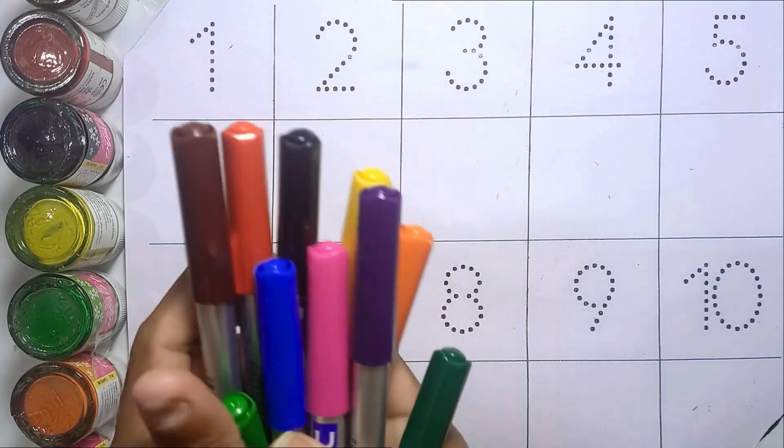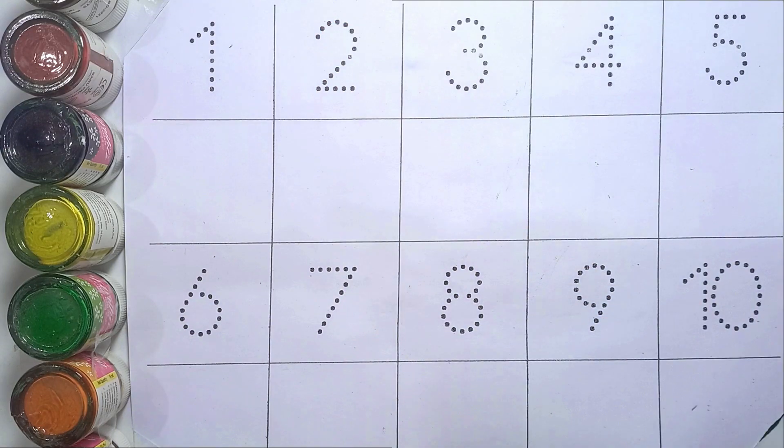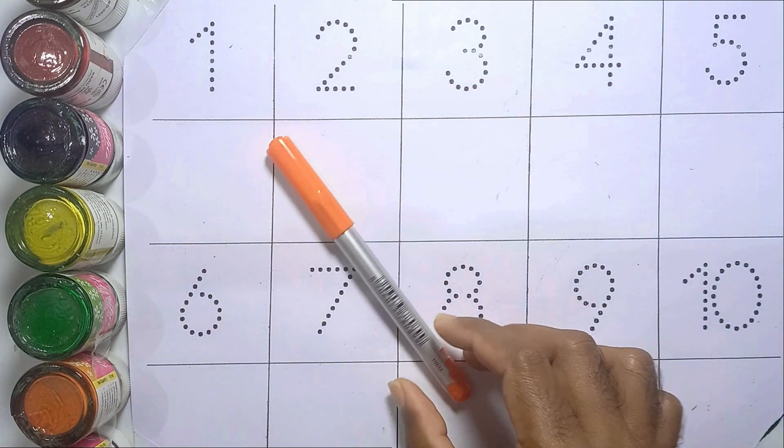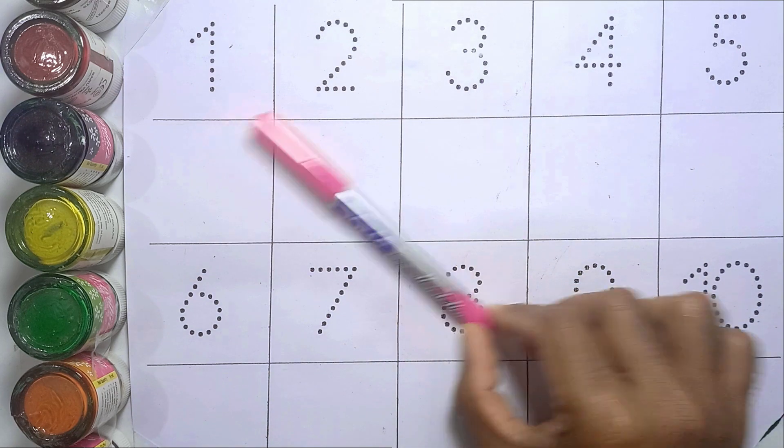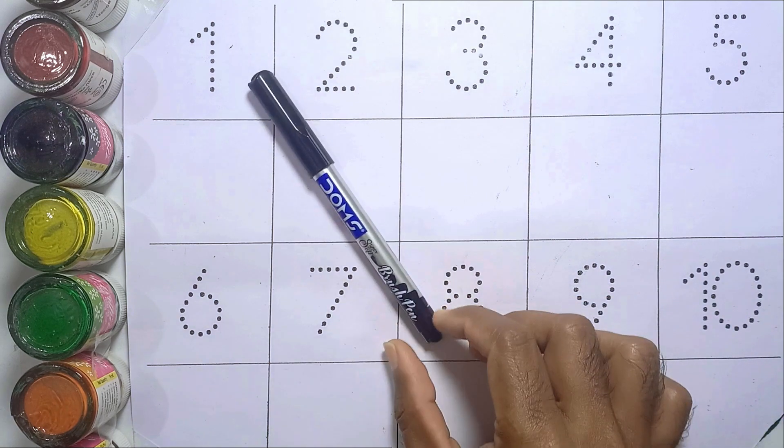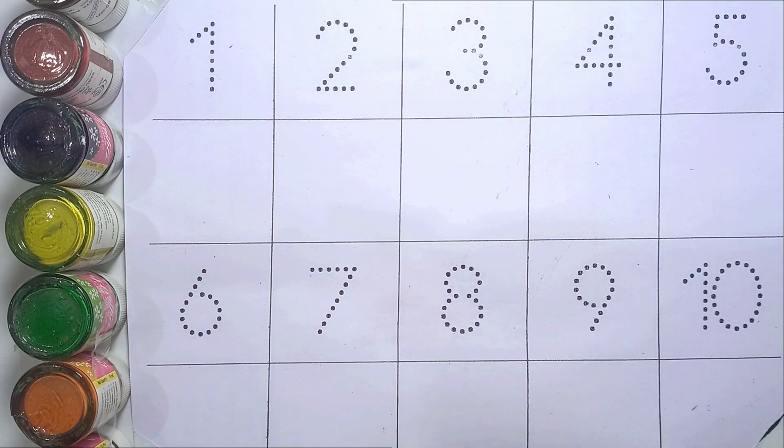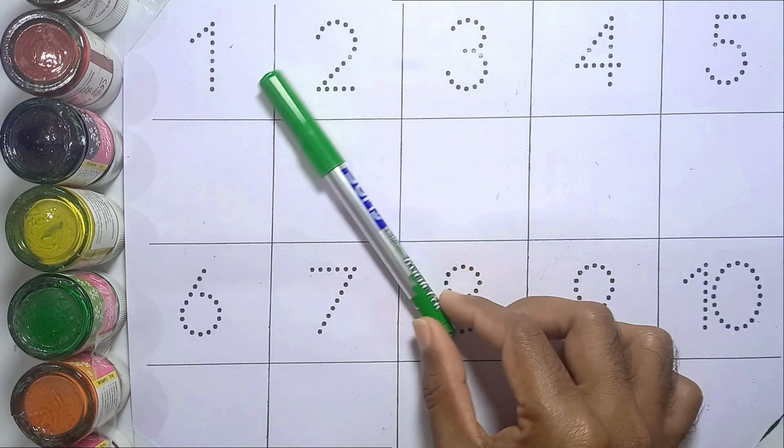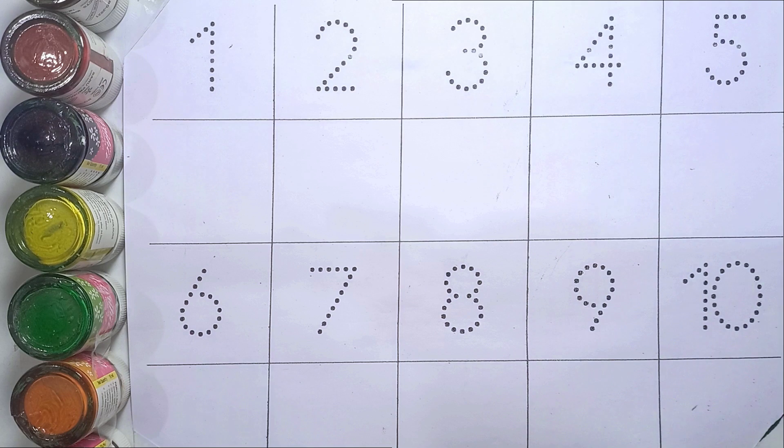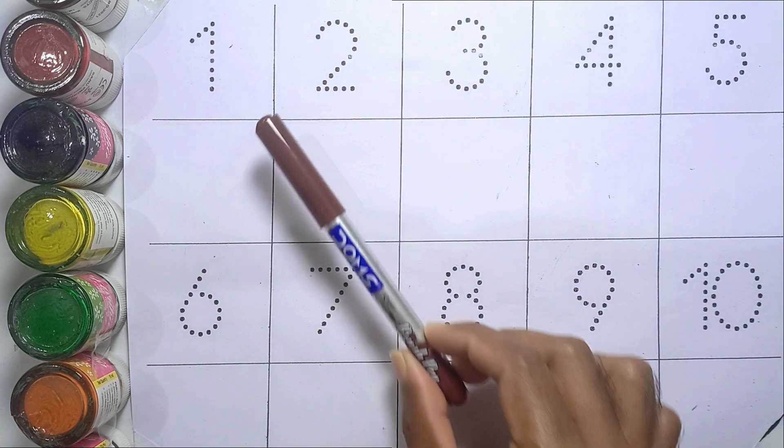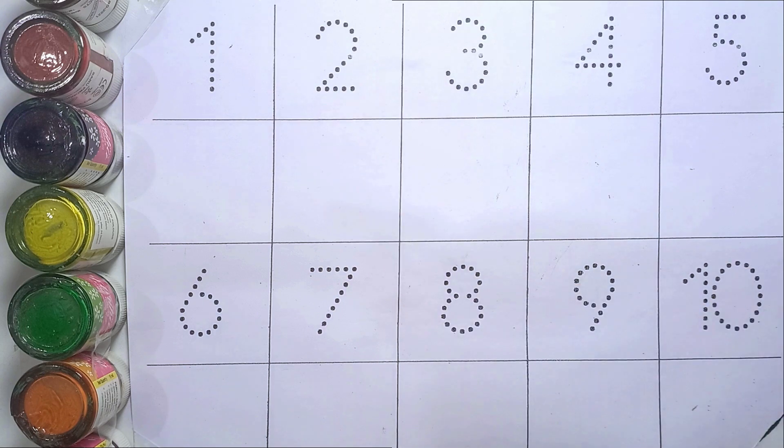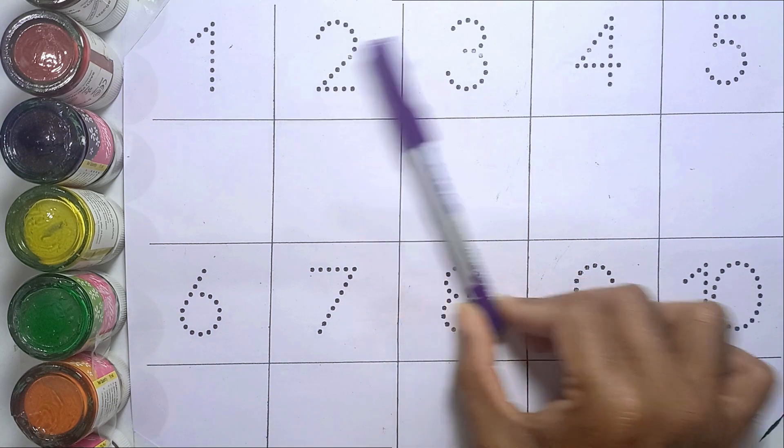This is our color palette: green color, orange color, yellow color, pink color, black color, blue color, sea green color, red color, brown color, purple color.